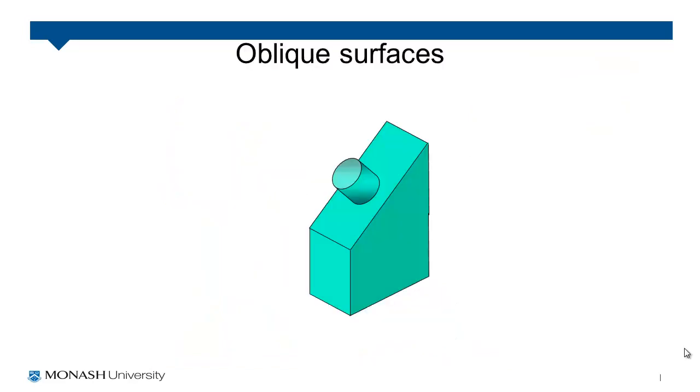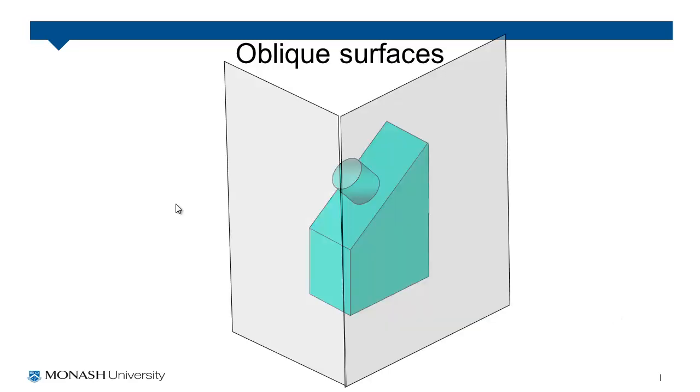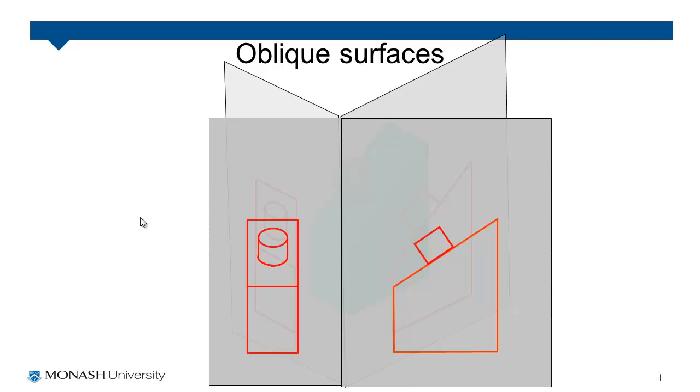Our last example here is going to be looking at oblique surfaces and auxiliary projections. If we take the object that we have here and set up our windows like so like we have before and project off our views we get the following two views of our object. Then we can open them up as we have done before and we get this drawing here.